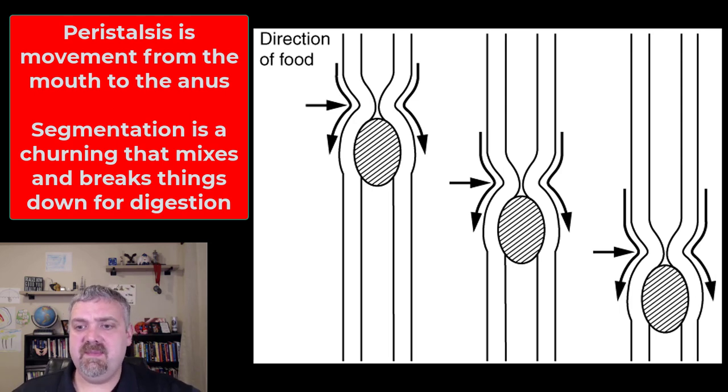So here we see peristalsis. Think about like squeezing a tube of toothpaste from the bottom. You're squeezing behind what you're swallowing or what you're moving, and that's going to push it forward. From the mouth to the pharynx, that's going to be swallowing. But then from the pharynx to the esophagus, the esophagus to the stomach, etc., that's going to be peristalsis, a one-way movement of material, one-way movement of food.